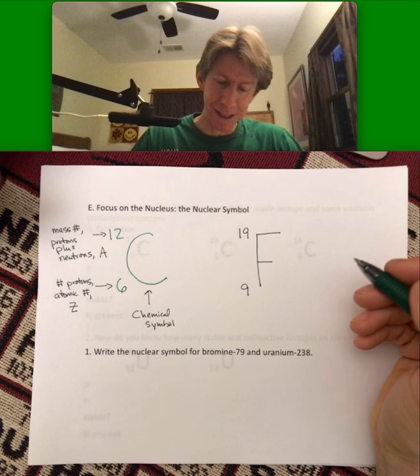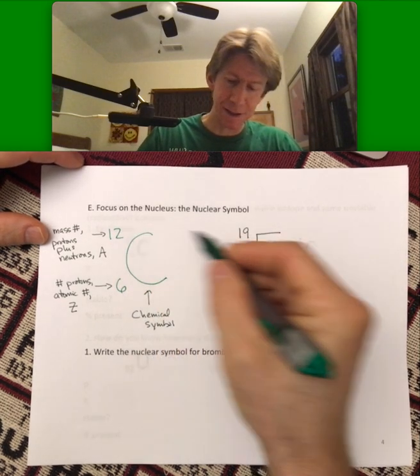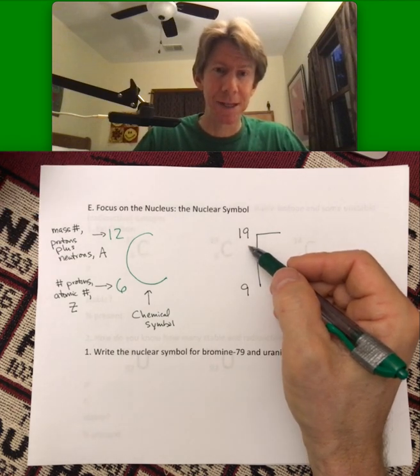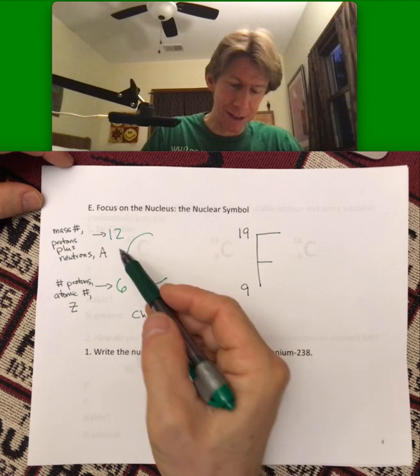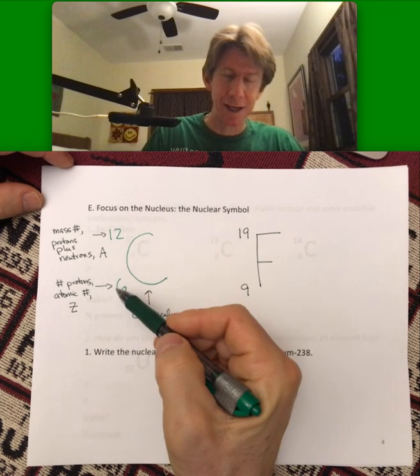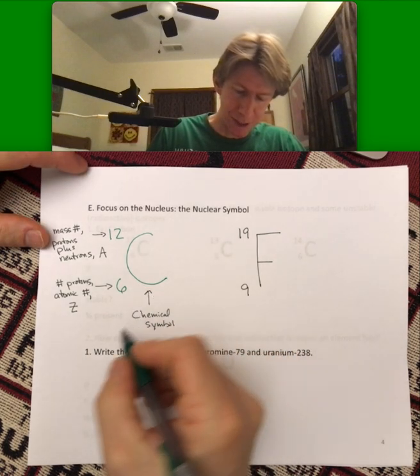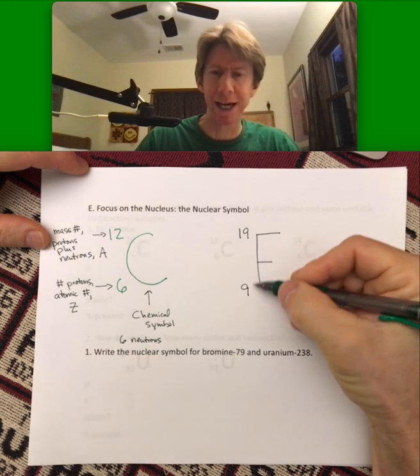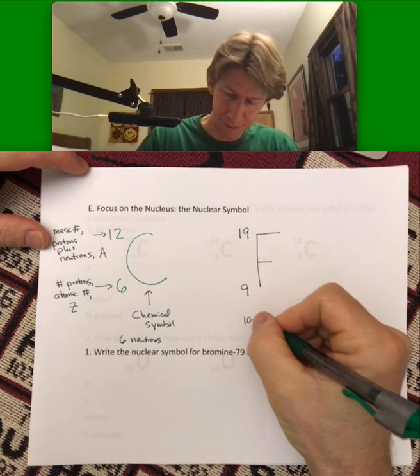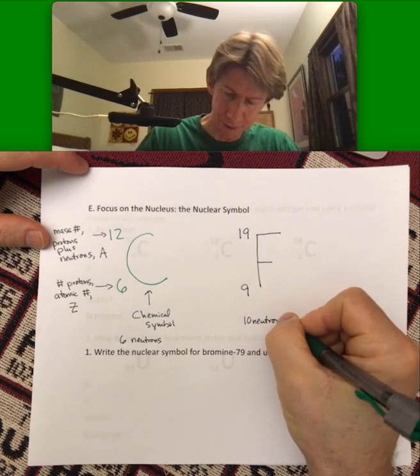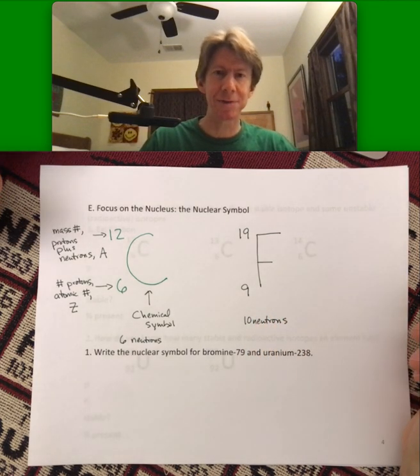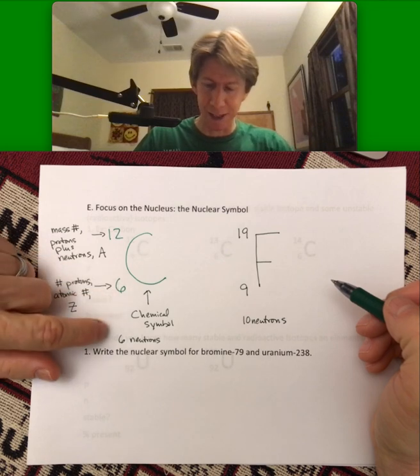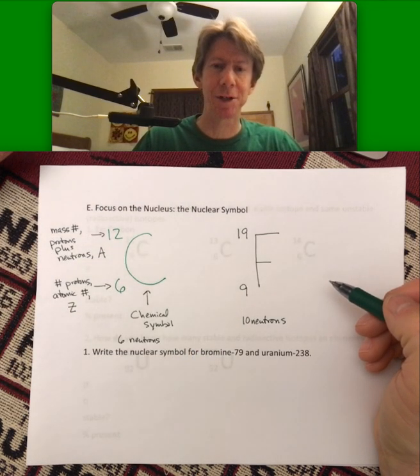But one question we can ask is, for either of these nuclear symbols, for these types of atoms, how many neutrons are there? And the way you do that is if this is neutrons plus protons and this is protons, you just subtract. And so this one is going to have six neutrons. And this one's going to have 10 neutrons. And you can see that at least for carbon and fluorine's area of the periodic table, the number of neutrons and protons are actually pretty close. We'll talk more about that.